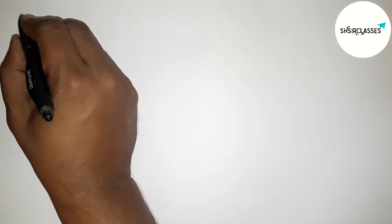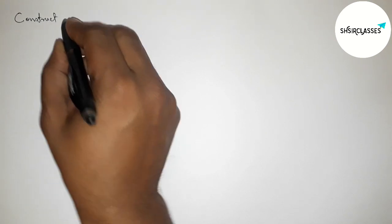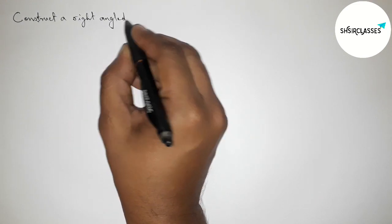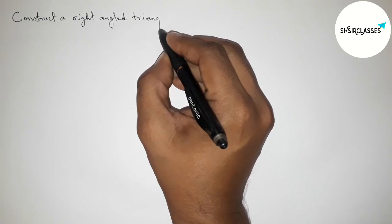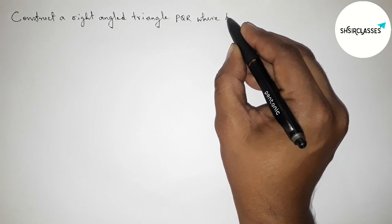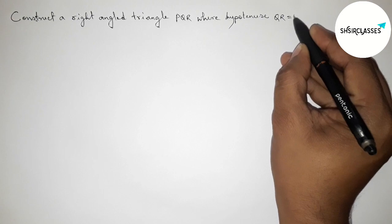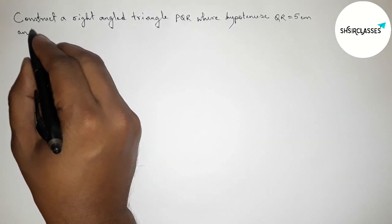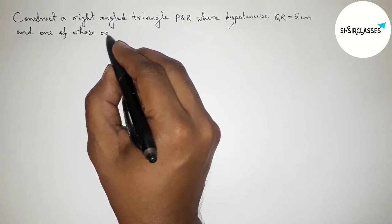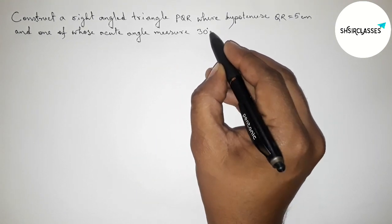Hi everyone, welcome to Essay Share Classes. Today in this video we have to construct a right angled triangle PQR where the hypotenuse QR equals 5 centimeters and one of whose acute angles measures 30 degrees. I am going to construct this right angle triangle PQR in an easy way, so please watch the video till the end. Let's start.